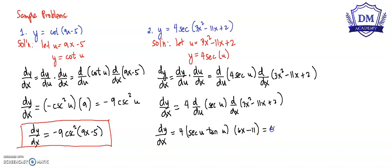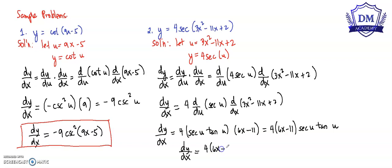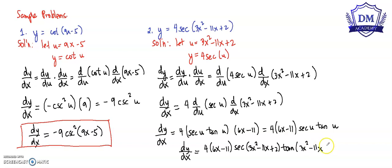So finally, our dy over dx is equal to 4 times (6x minus 11) times secant of (3x squared minus 11x plus 2) times tangent of (3x squared minus 11x plus 2). This is the derivative of y with respect to x.